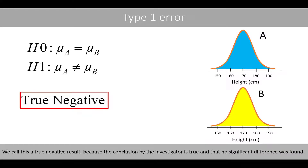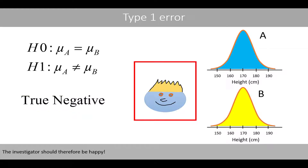We call this a true negative result because the conclusion by the investigator is true and that no significant difference was found. The investigator should therefore be happy.